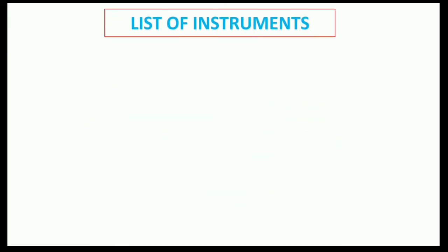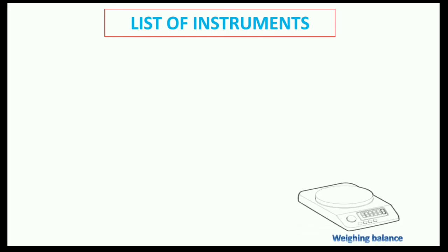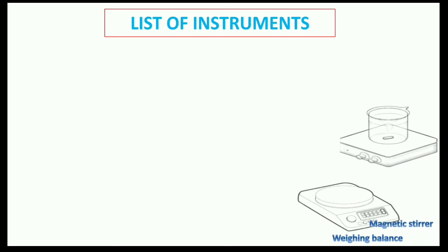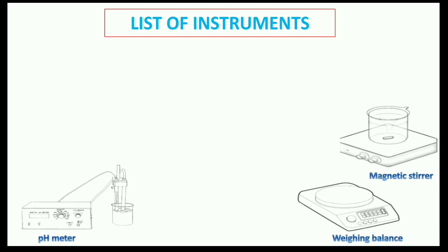The list of instruments starts with a weighing balance, which is used to measure the weight of chemical reagents. Then we have a magnetic stirrer, used to mix the chemical components in distilled water. A pH meter is required to maintain the pH of a solution.